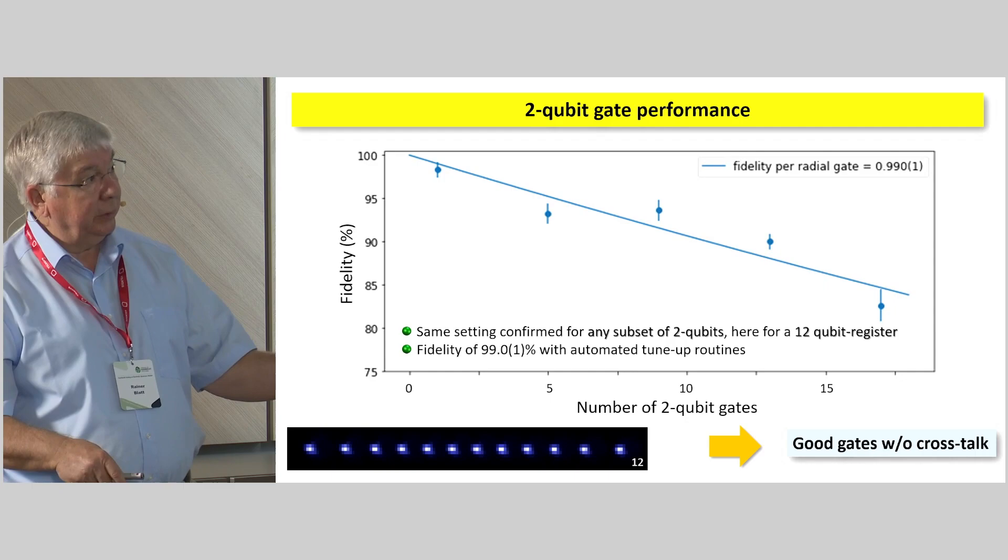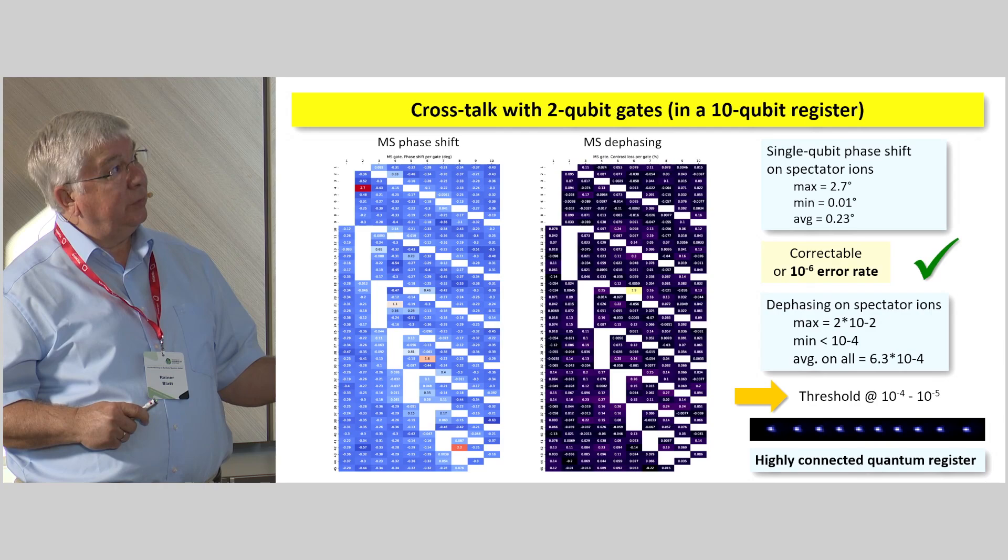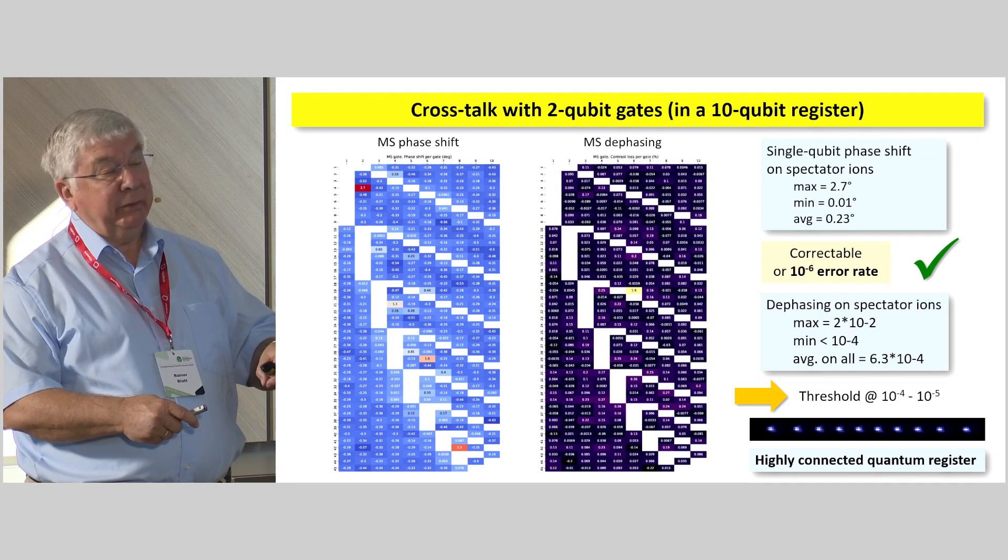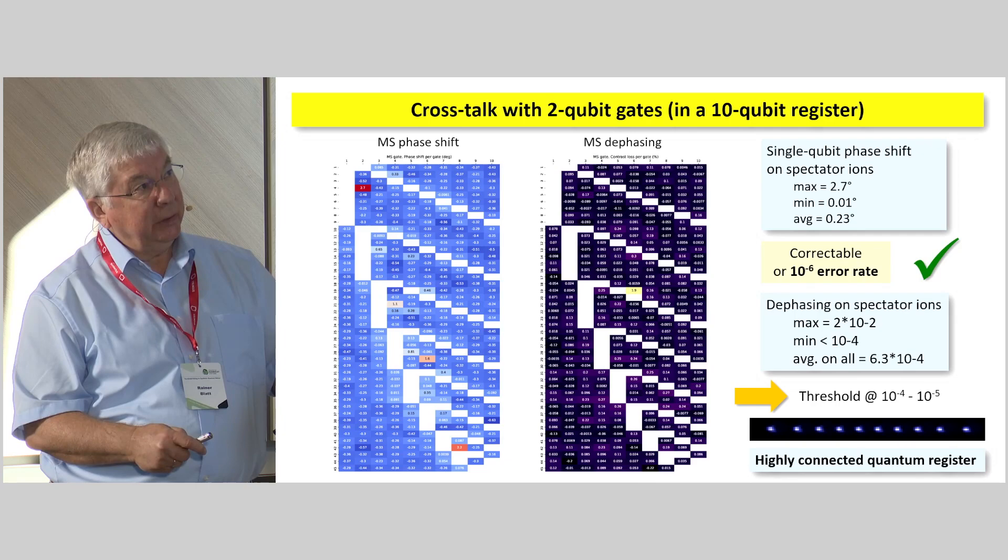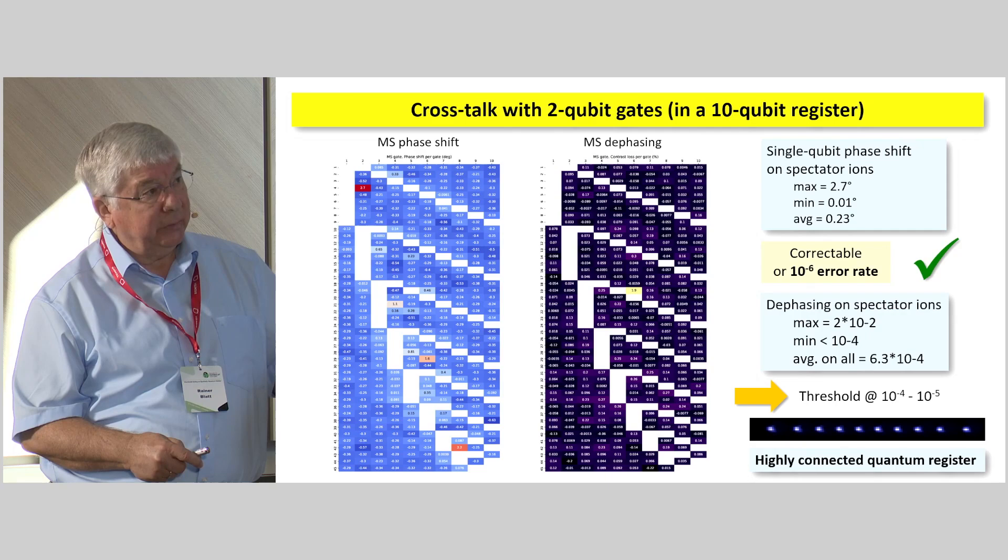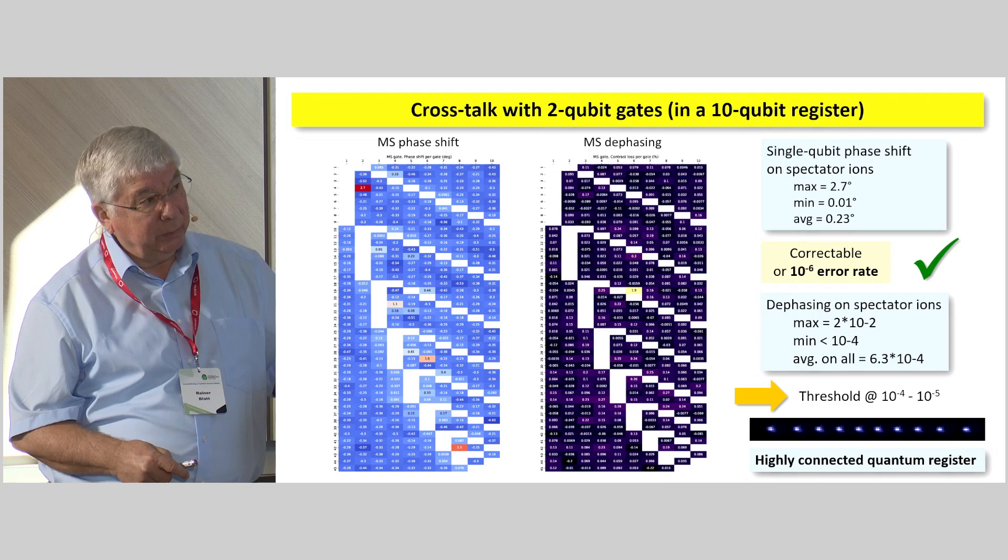Just to give you the crosstalk matrix right here. The crosstalk matrix, two qubits, can be decomposed in two different things. There's a so-called phase shift on the neighboring ion, because there's, of course, an off-resonant action to that one. But, of course, since we are talking with Mølmer-Sørensen gates with two different frequencies, there could also be a dephasing on neighboring ions. And so we distinguish between these two things. For the single-qubit phase shifts on spectator ions, these are the ions that are sitting right next to it or somewhere, but are not directly addressed. This is correctable. We can do that because, as we said before, it can be used by addressing error correction. This one is not yet correctable. And this is the culprit that we have at this time.